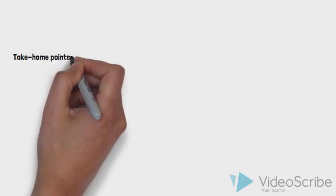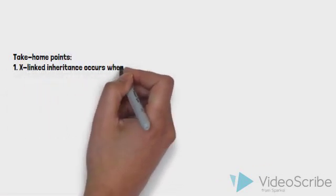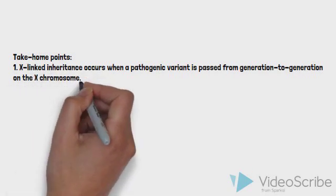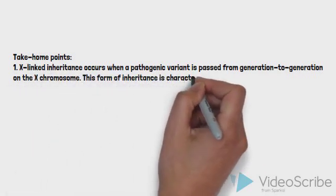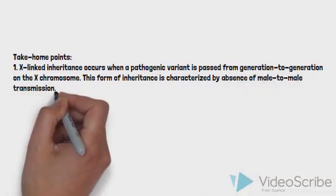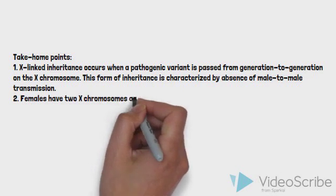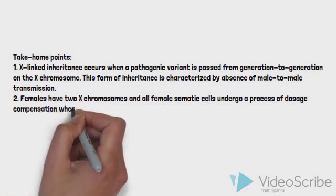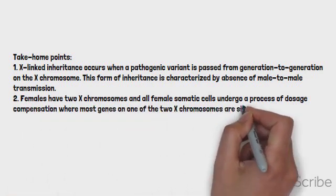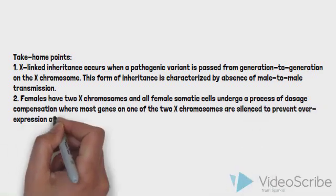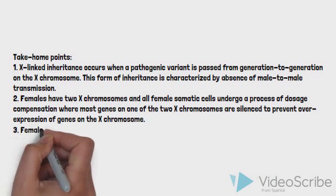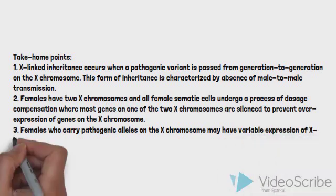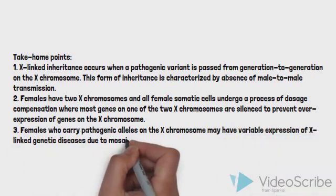That brings us to the end of the case for today. Let's review some take-home points from this second episode in our three-part series on genetic diseases. First, X-linked inheritance occurs when a pathogenic variant is passed from generation to generation or appears as a new change in a gene on the X chromosome, characterized by absence of male-to-male transmission. Second, females have two X chromosomes and all female somatic cells undergo dosage compensation, where most genes on one of the two X chromosomes are silenced to prevent overexpression. Third, females who carry pathogenic alleles on the X chromosome may have variable expression of X-linked genetic diseases due to mosaic X chromosome inactivation.